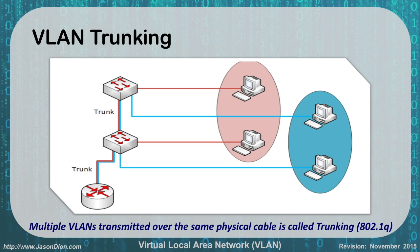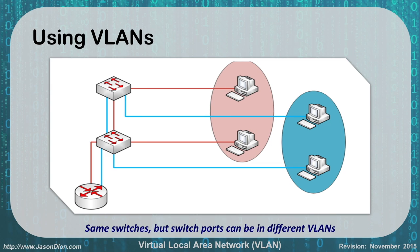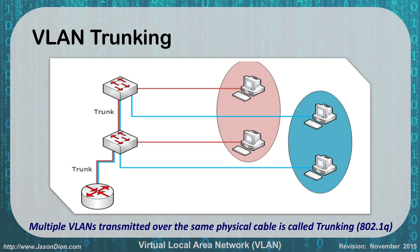The other thing we can do is VLAN trunking. In the last image, we had two physical cables going between the two switches to carry the network traffic — one for red and one for blue. When we do VLAN trunking, we can combine those onto a single cable. The traffic is marked to indicate which VLAN it's part of, so they can share the same cable and be logically separated, saving us cabling and wiring going between floors and between buildings.